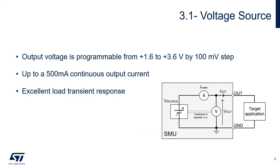The source measurement unit output voltage is programmable from 1.6V to 3.6V in 100mV steps. It can source a maximum of 500mA continuous output current, with an excellent load transient response even for transitions from very low to high current with fast current rise. This is especially suitable for supplying an STM32 microcontroller transitioning from standby mode to run mode without impacting its power supply voltage.